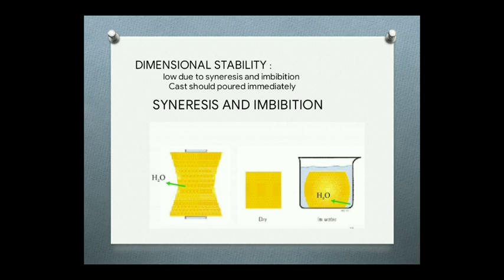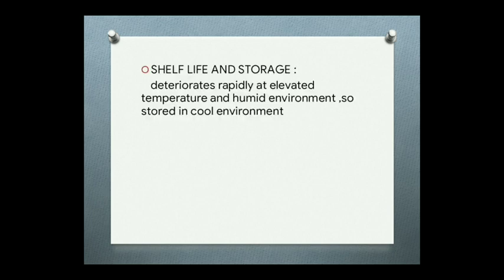Dimensional stability is also low for alginate because of syneresis and imbibition. Syneresis means loss of water — the alginate may shrink. Imbibition means if it is kept in water it absorbs water and swells. Because of this, dimensional stability is very low, so the cast must be poured as soon as possible immediately after taking the impression.